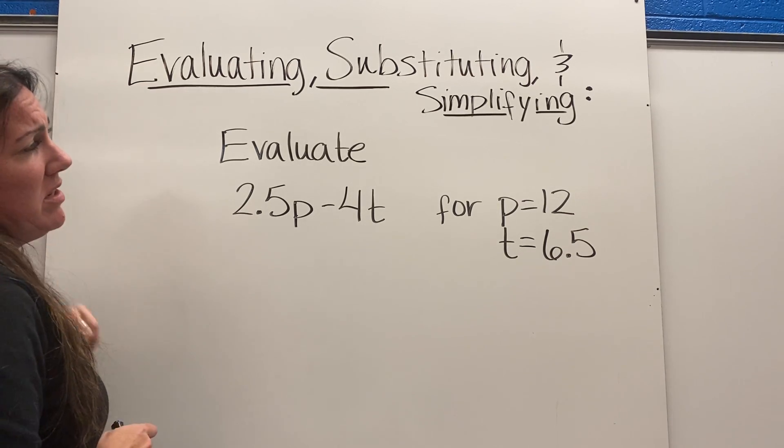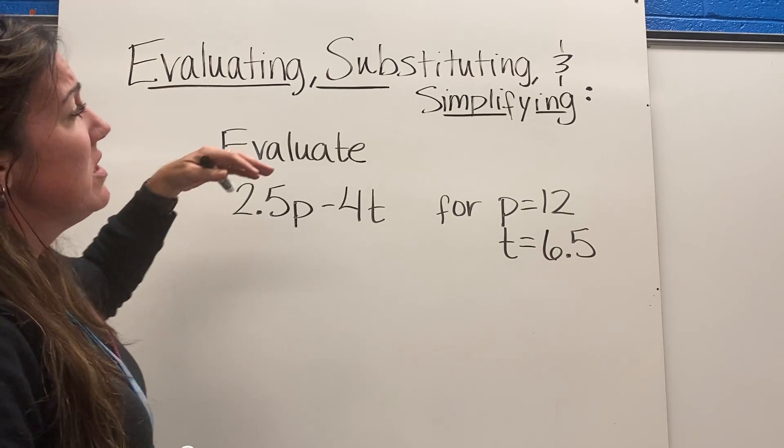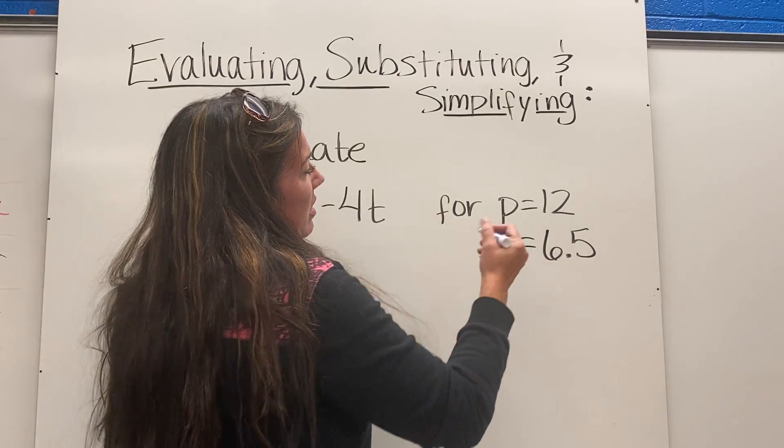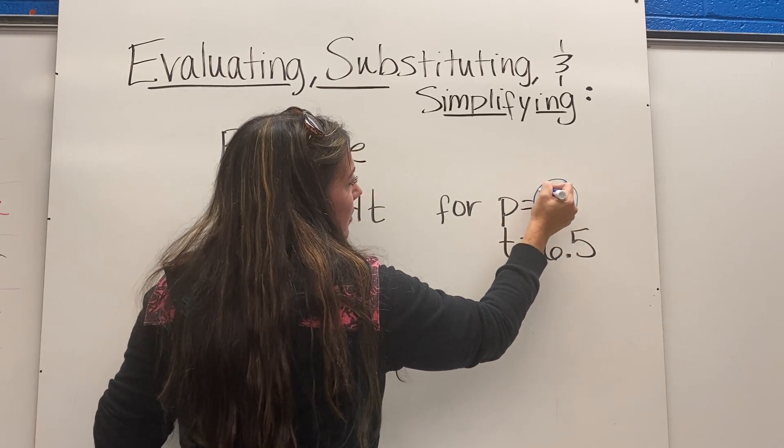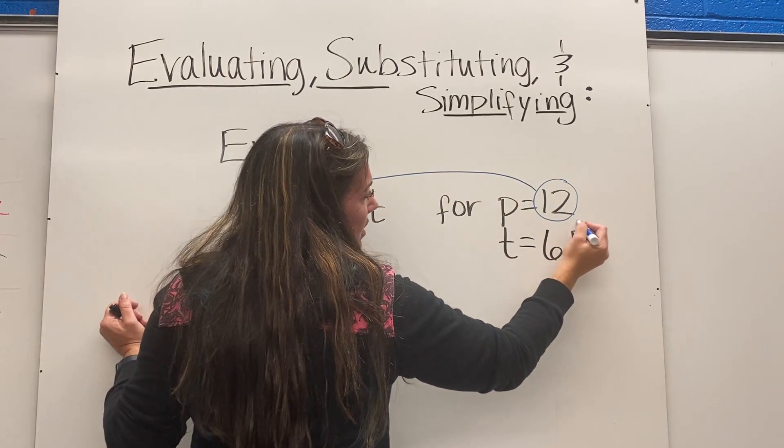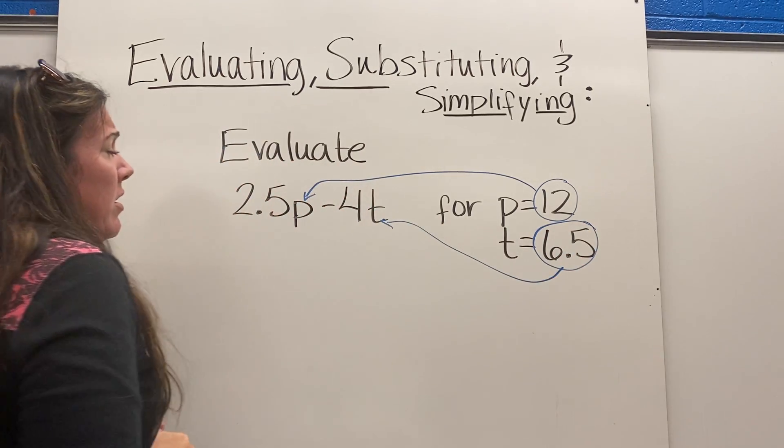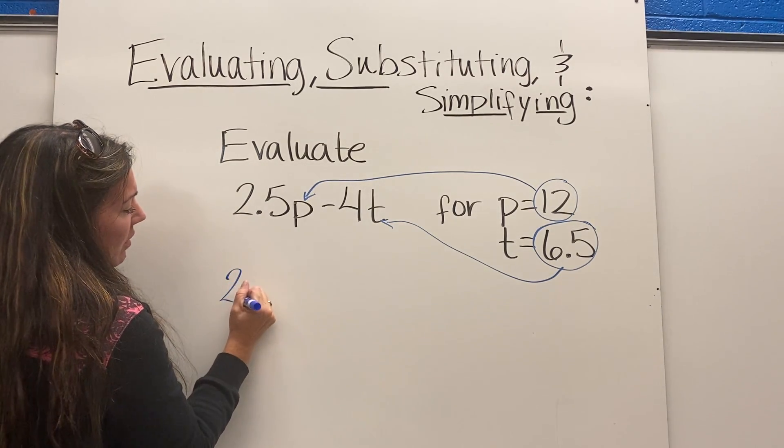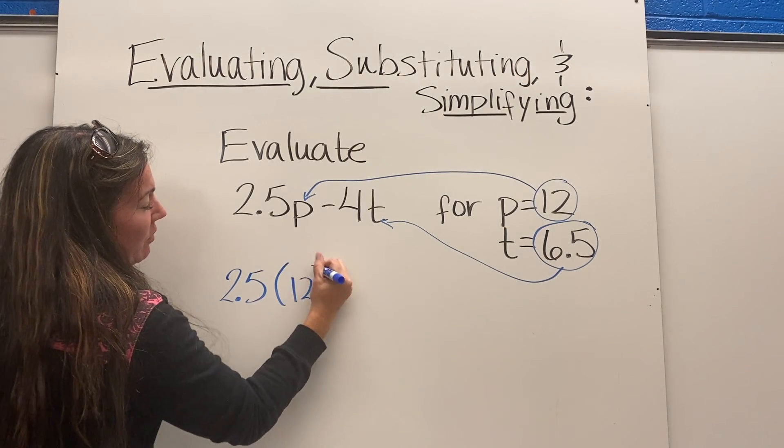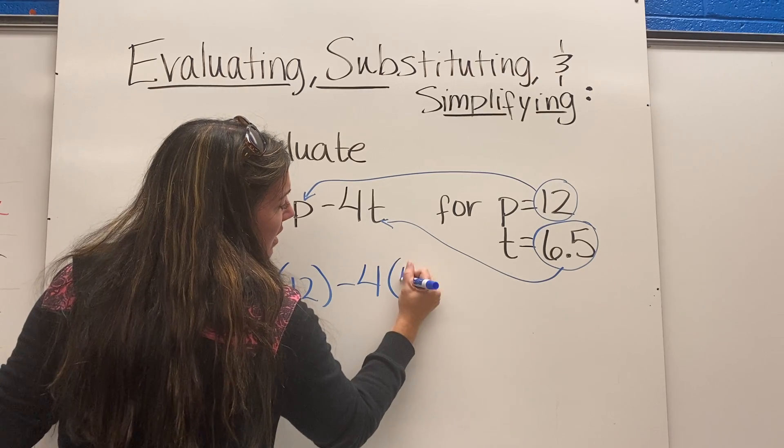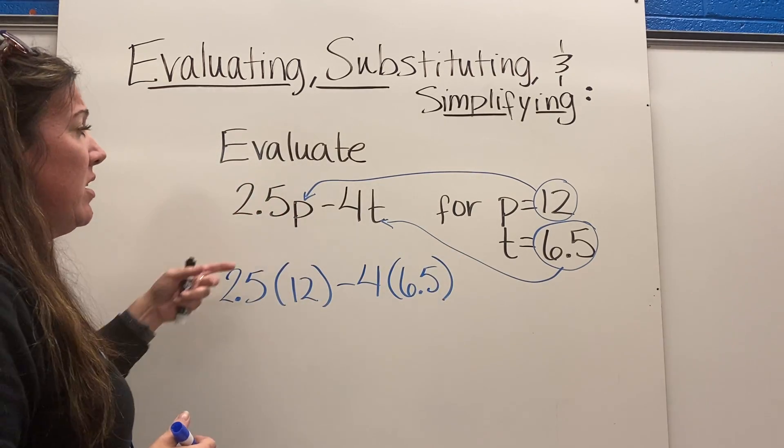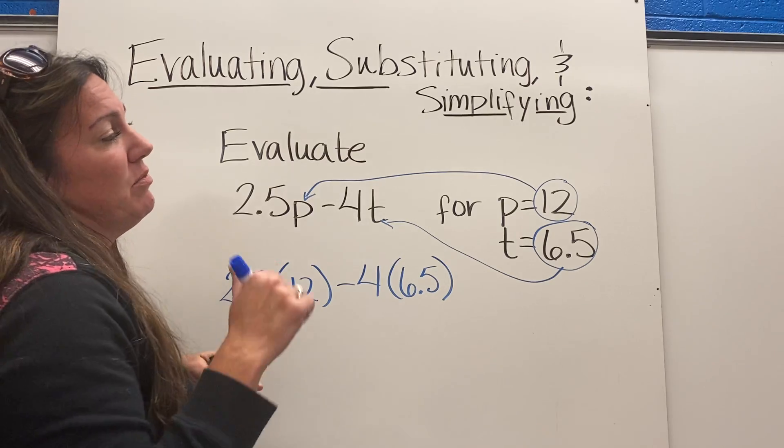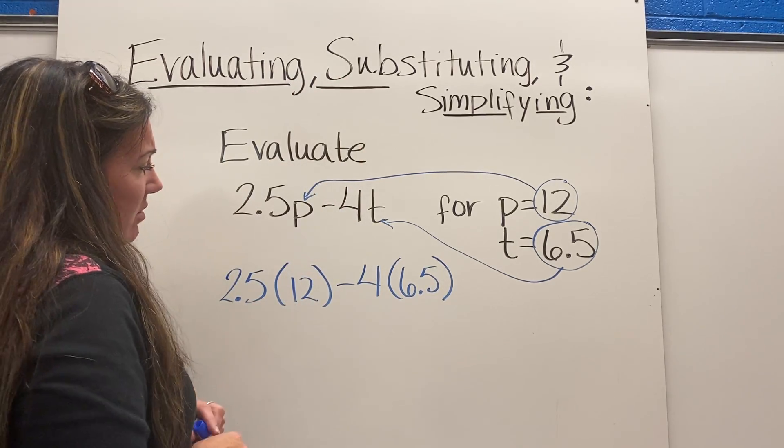We get to use all of the different words in our title to solve it. First thing we want to do is to substitute. Let's take p out and put in 12, and let's take t out and put 6.5 in for t. So I'll substitute that there and I'll substitute this here. Now if you look, 2.5 and p are right next to each other, so that means multiplying. So I'll take 2.5 and multiply it by 12, and then subtract 4 times 6.5.